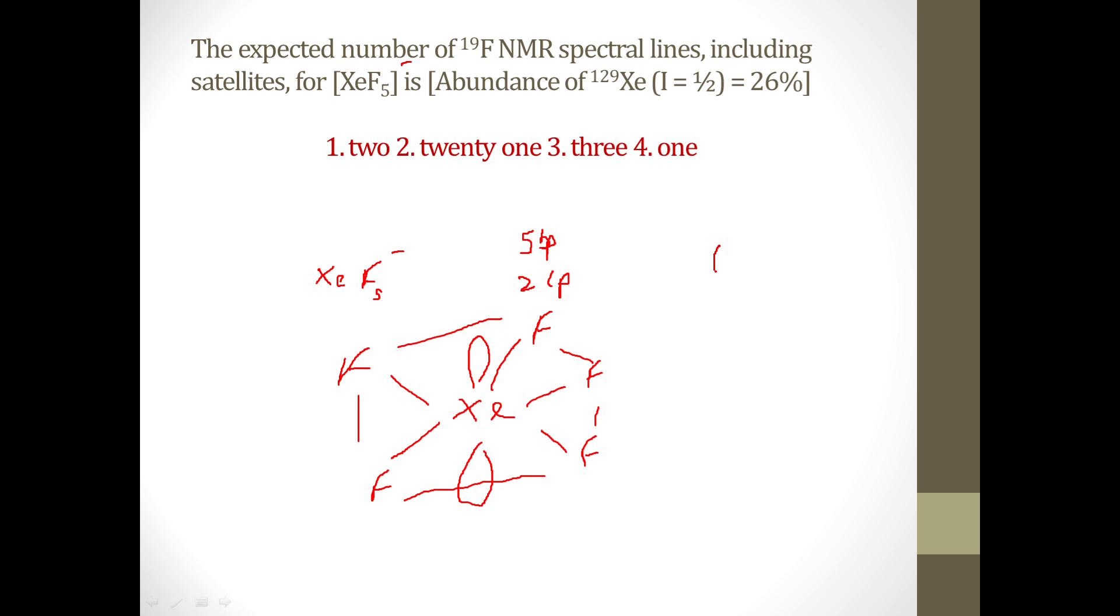So all these five fluorines are going to give only one single peak in the NMR. So if I draw the NMR, you'll see one single peak for this fluorine. But it is given that this is xenon.